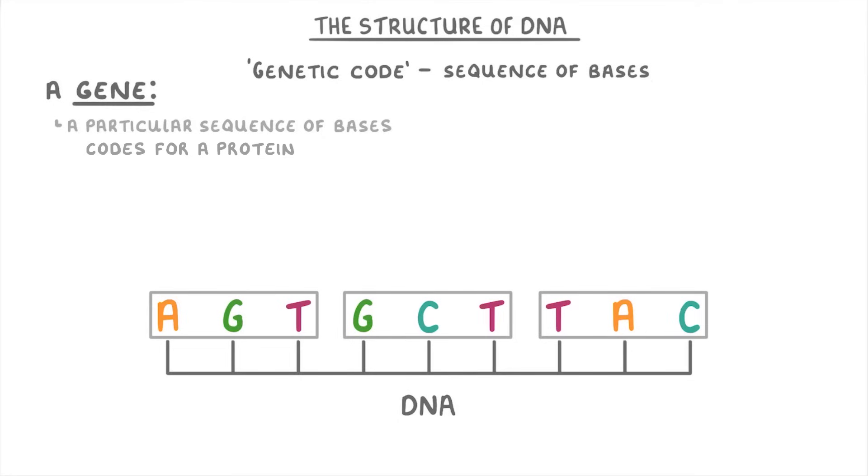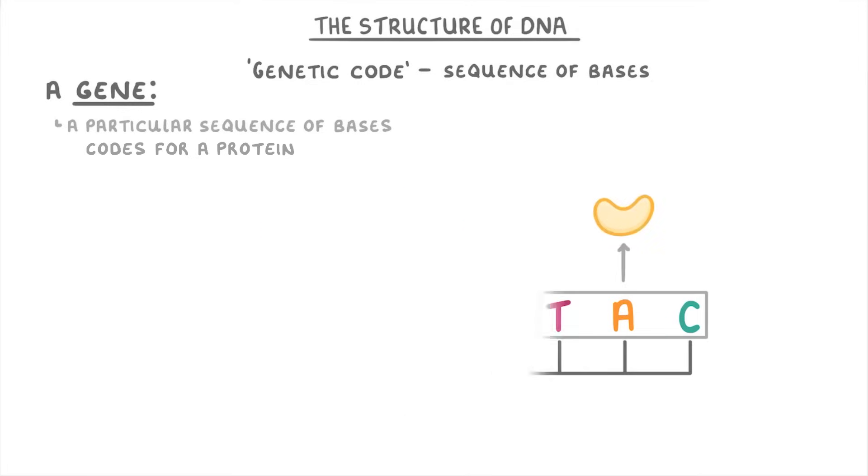For example, A-G-T would code for one amino acid, while G-C-T might code for a different one, and T-A-C would code for a third. To understand how this helps us code for a protein, let's take a longer sequence of bases and work through the steps for how it would form a protein.